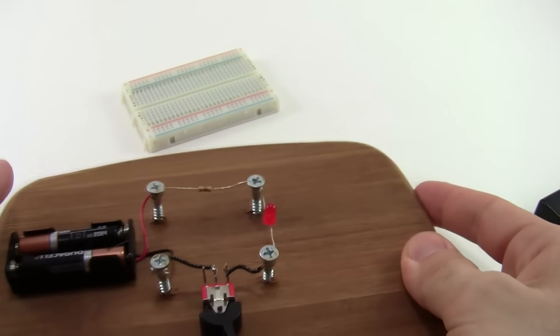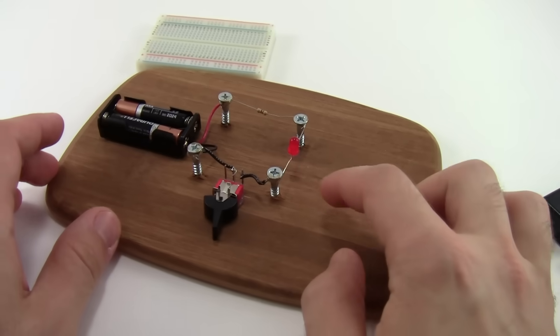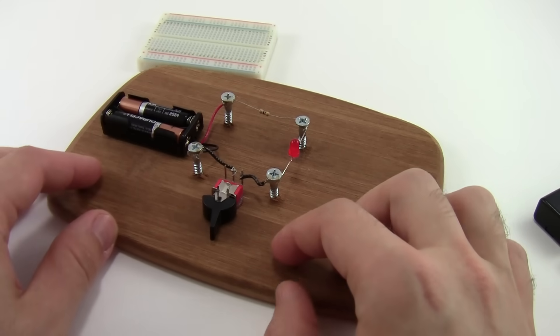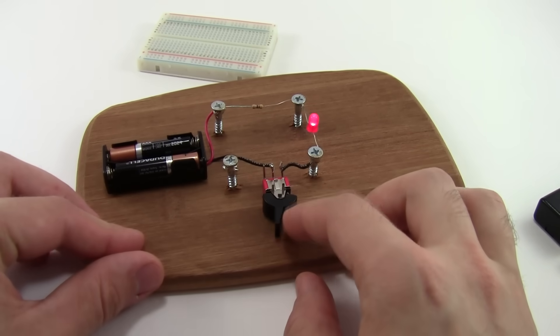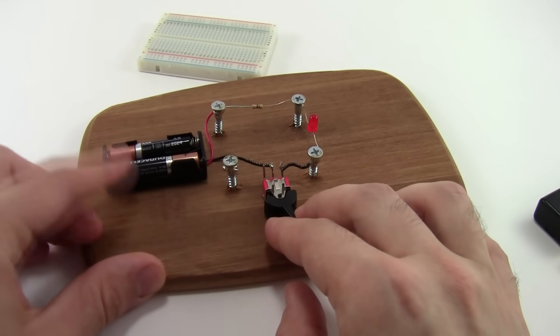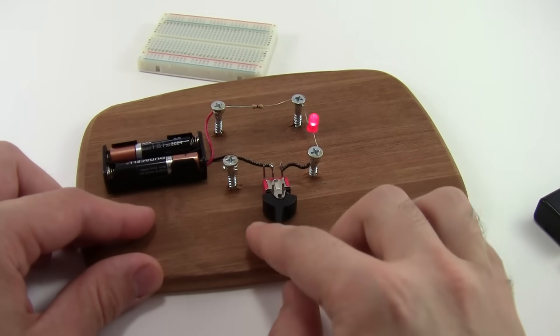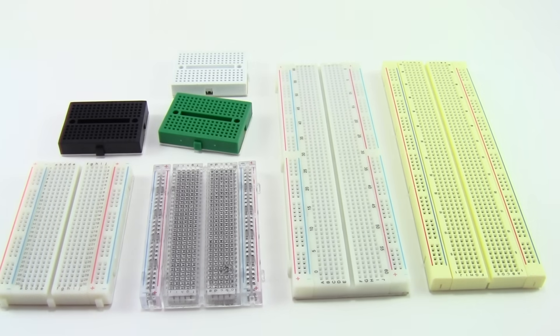At this point, you might be thinking that this doesn't really look like it has anything to do with bread. The name breadboard comes from the early days of electronic circuits when people would literally use wooden boards with screws or nails driven into them to make electronic connections. Modern breadboards are made from plastic and come in all shapes, sizes, and even different colors.